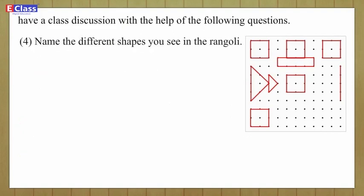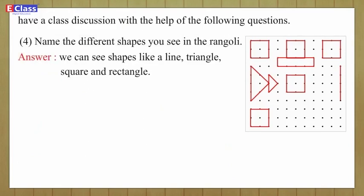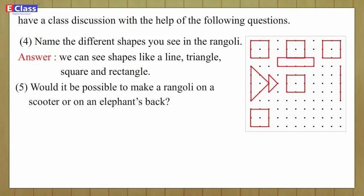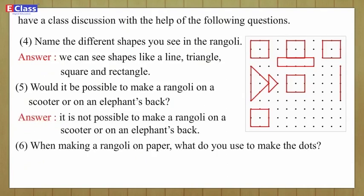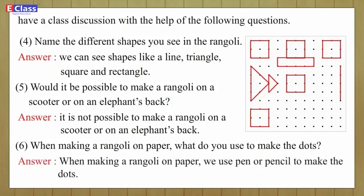Four: name the different shapes you see in the rangoli. Answer: we can see shapes like a line, triangle, square, and rectangle. Five: would it be possible to make a rangoli on a scooter or on an elephant's back? Answer: it is not possible to make a rangoli on a scooter or on an elephant's back. Six: when making a rangoli on paper, what do you use to make the dots? Answer: we use a pen or pencil to make the dots.